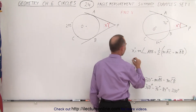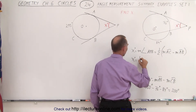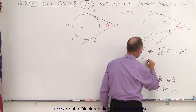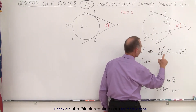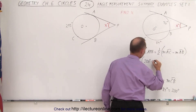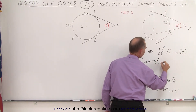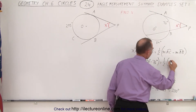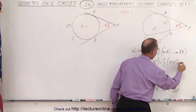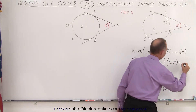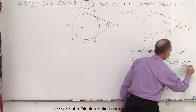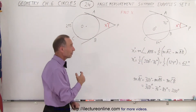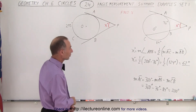So now we can say that x degrees is equal to one-half times the measure from A to C, which is 200 degrees, minus the measure from A to B which is 76 degrees. That is equal to one-half times 200 minus 76, which gives us 124 degrees, and so half of that equals 62 degrees. So x is equal to 62.